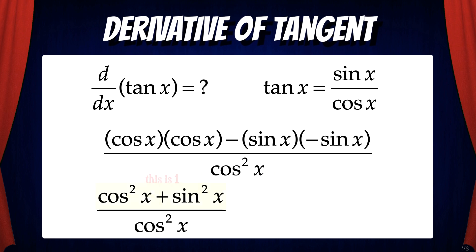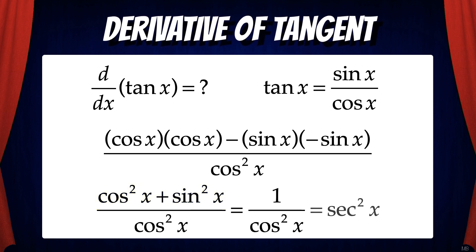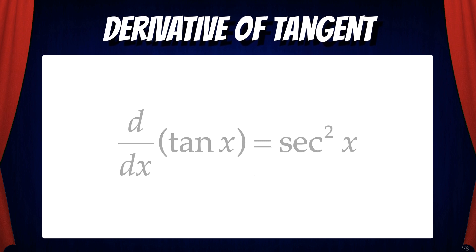Notice that the numerator becomes cosine squared x plus sine squared x, which is a trig identity equal to 1. So this leaves us with 1 over cosine squared x, which is equivalent to secant squared x. And we got it! The derivative of tan x is secant squared x.